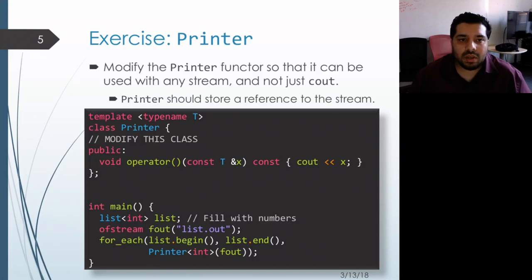What we have here right now is a printer class template that's going to act as a functor. It overloads the function call operator, takes in a single element by reference to const, and then prints out that element to cout.